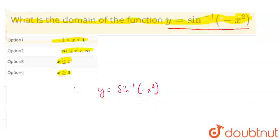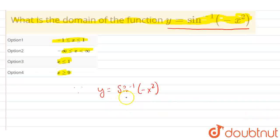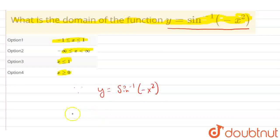Now, we know that the range of sine inverse of minus x² is less than or equal to π/2 and greater than or equal to minus π/2.